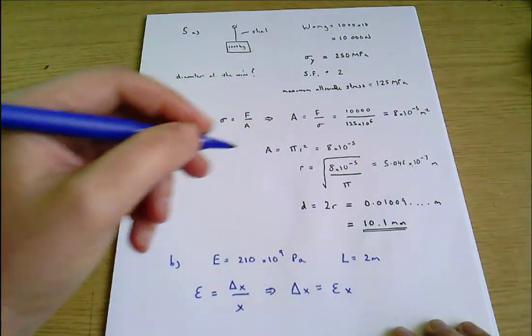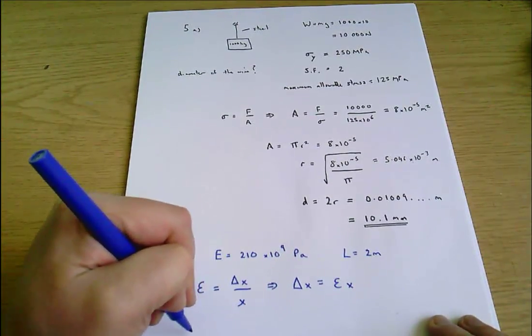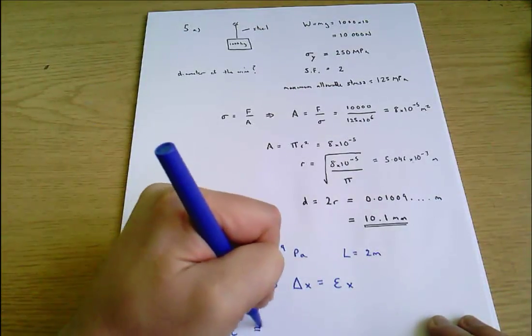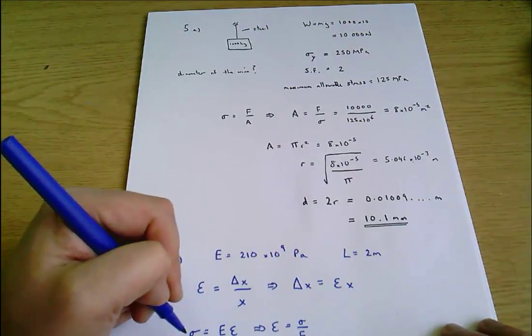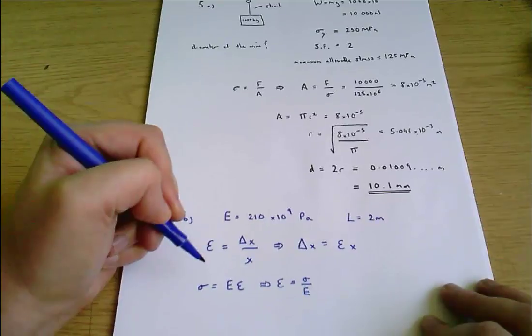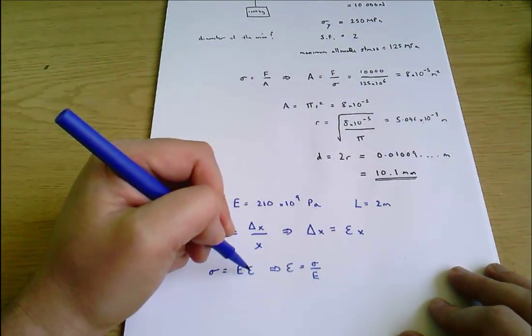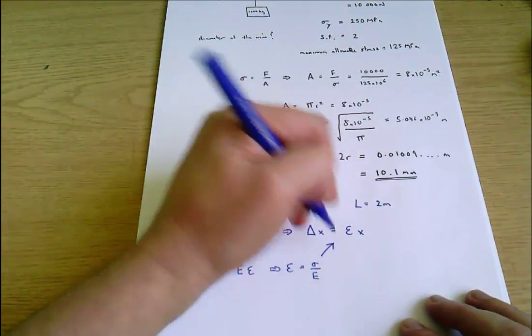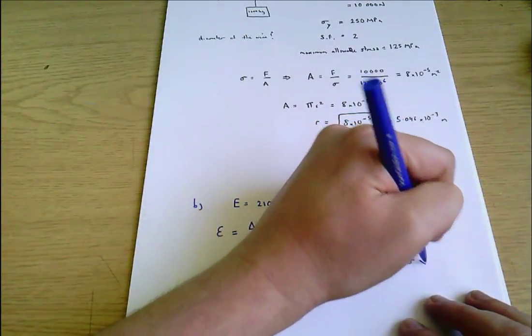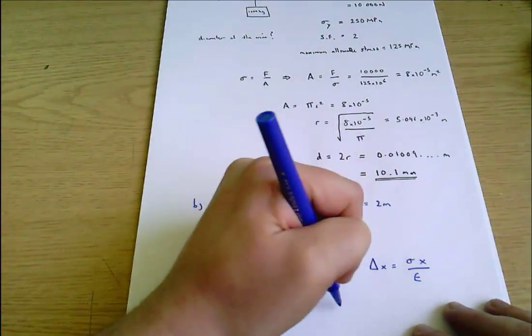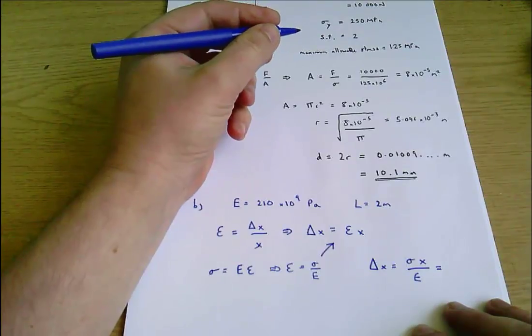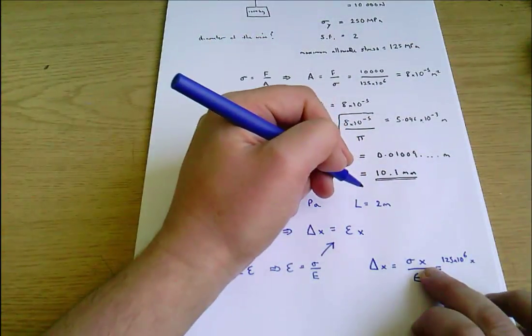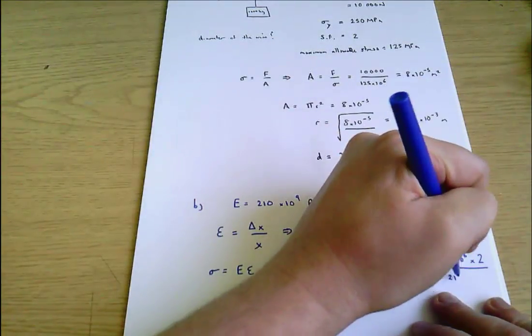We don't know the strain yet but what we also know is sigma equals E epsilon. That means epsilon equals sigma divided by E - stress divided by Young's modulus gives us strain. Remember always sigma here is stress, epsilon here is strain and capital E here is Young's modulus. So I can substitute this in here and I'll get delta x equals sigma x divided by E. That equals sigma is 125 megapascals, 125 times 10 to the 6 times the original x, which is 2, divided by E the Young's modulus which is 210 times 10 to the 9.